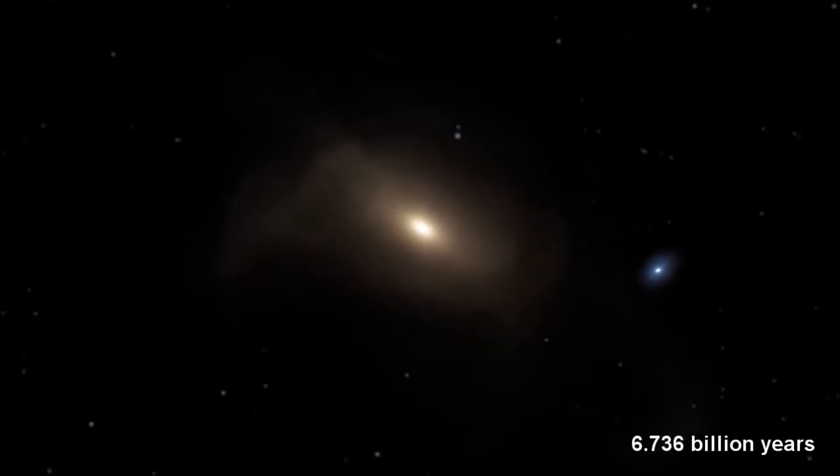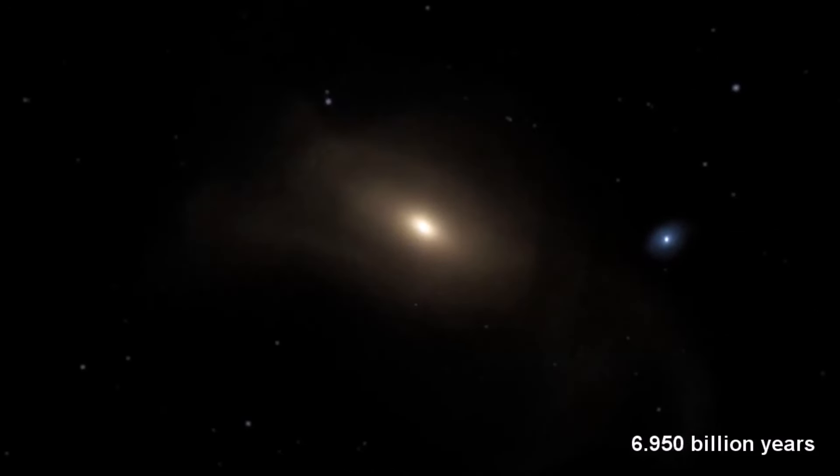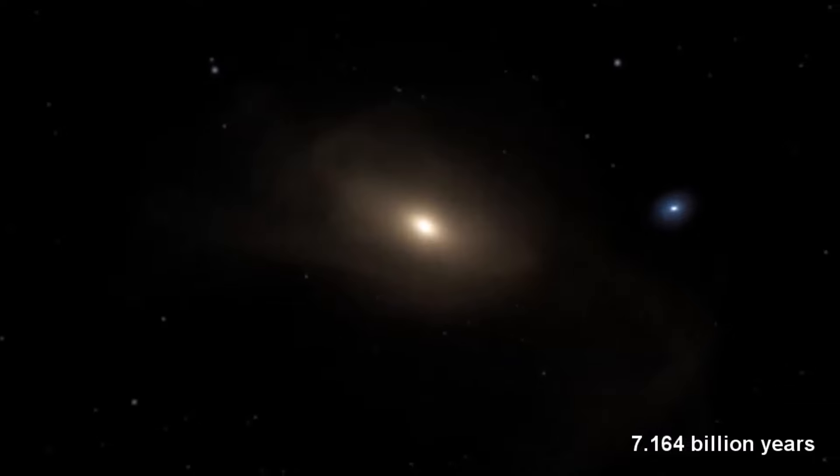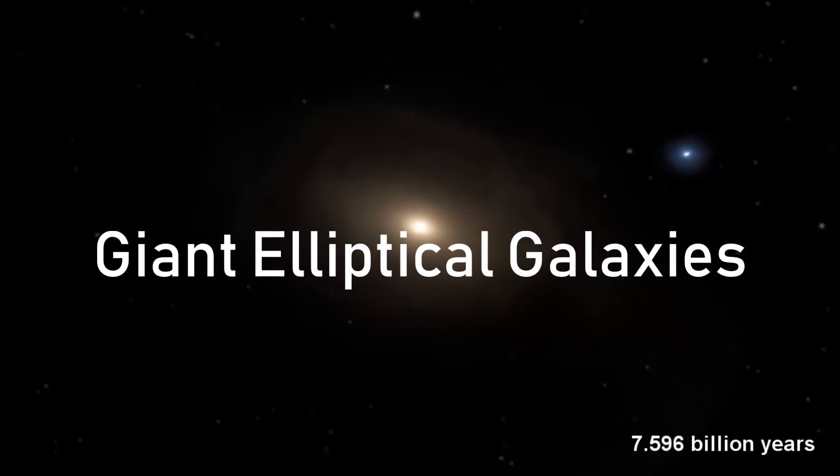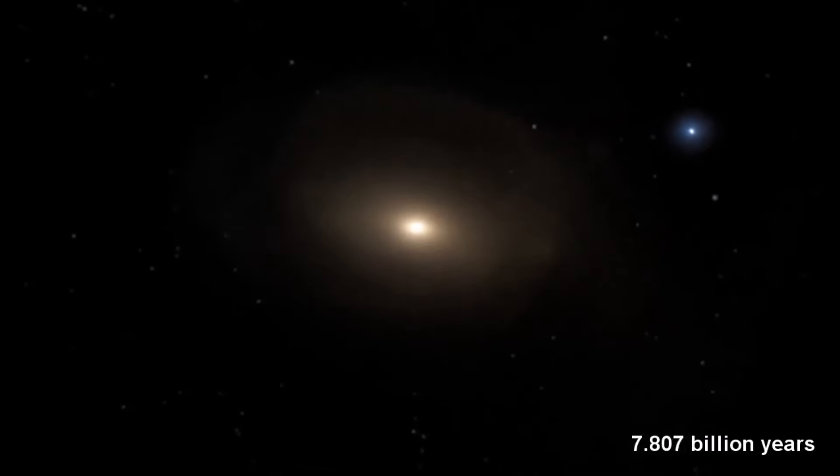Once spiral galaxies exceed a certain size, they become so massive and dense that the arms are lost. These galaxies are then classified as giant elliptical galaxies, and are believed to be the final stage before the galaxy starts to die.